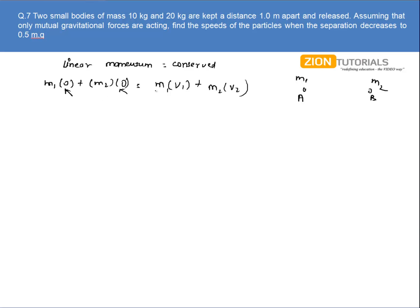So I will solve this equation. Mass M1 is 10 kg, velocity is V1, that will be minus 20 into V2. So V1 equals minus 2 times V2. The minus sign shows that the direction of velocity V2 is opposite to that of V1.